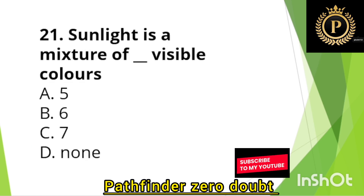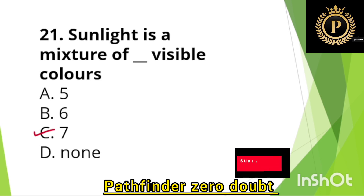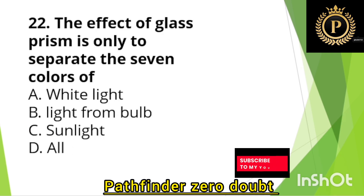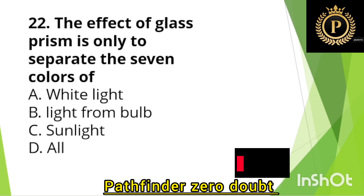Sunlight is a mixture of seven visible colors. The effect of a glass prism is only to separate the seven colors of — Option D: All.